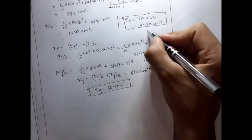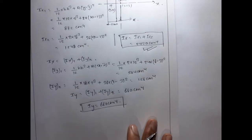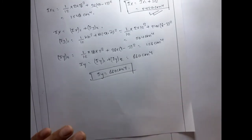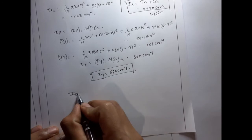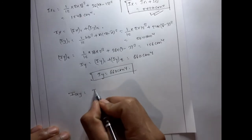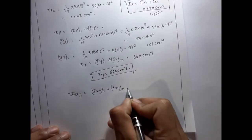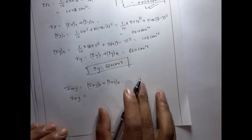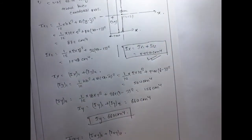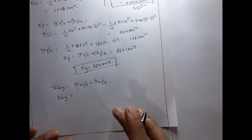Summary of results so far: Ix = 2420 cm⁴ and Iy = 660 cm⁴. Now we calculate the product of inertia Ixy = Ixy1 + Ixy2. For shape one — since it is a rectangle with a symmetrical case — the product of inertia about its own centroidal axis is zero.